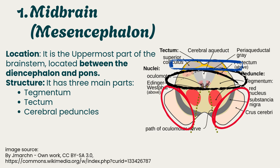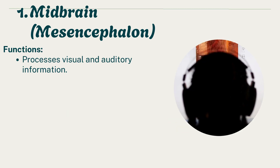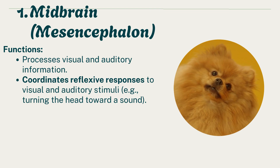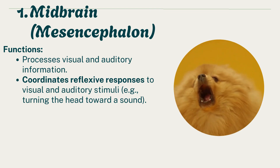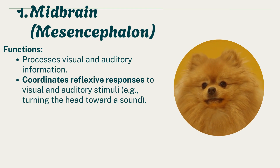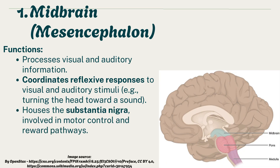The midbrain processes visual and auditory information and coordinates reflexive responses to visual and auditory stimuli — for example, turning the head toward a sound. It also houses the substantia nigra, which is involved in motor control and reward pathways.